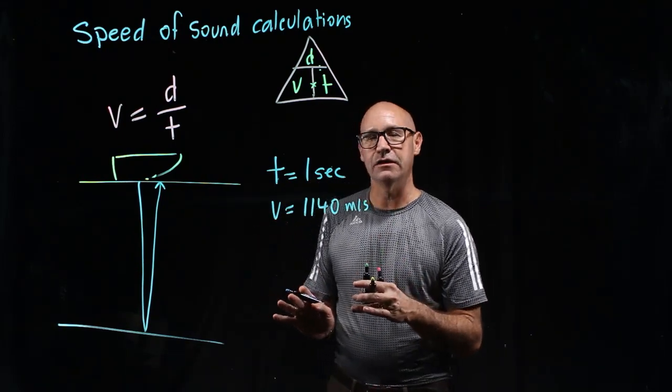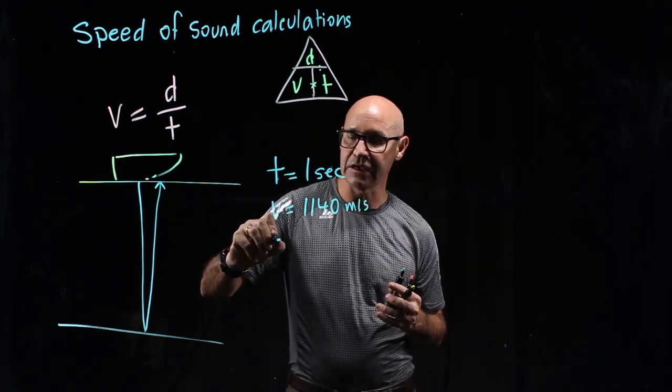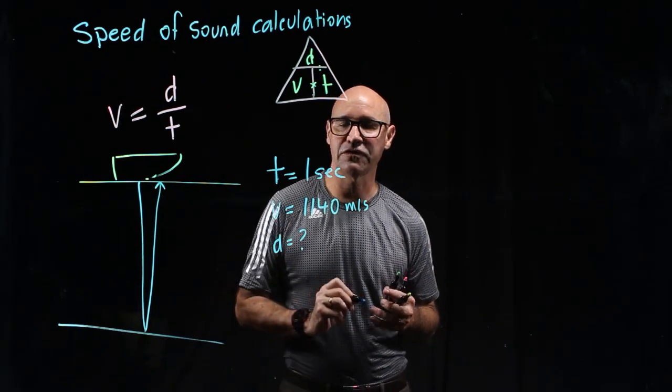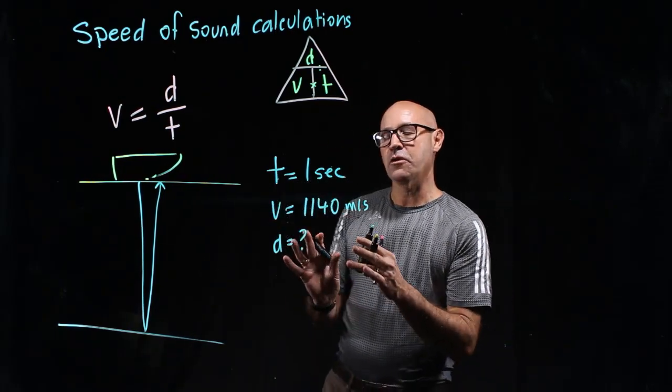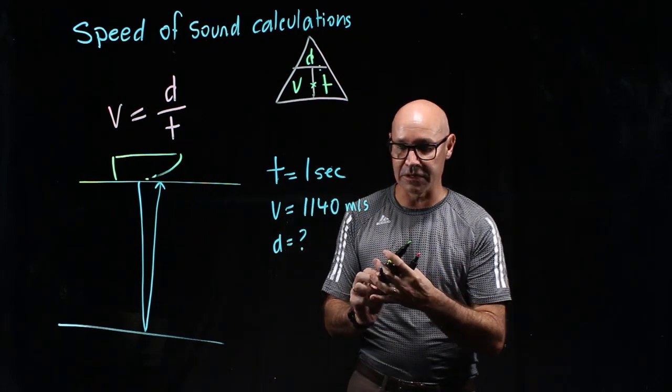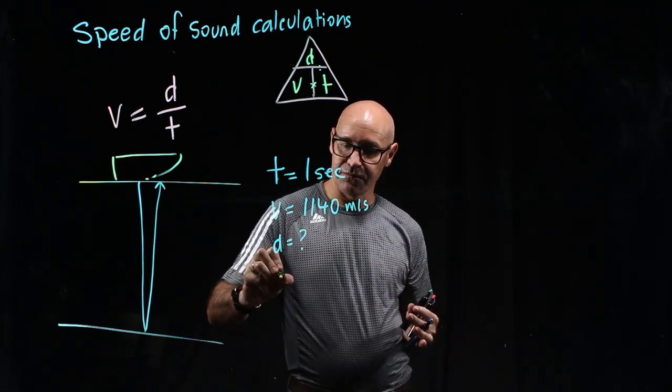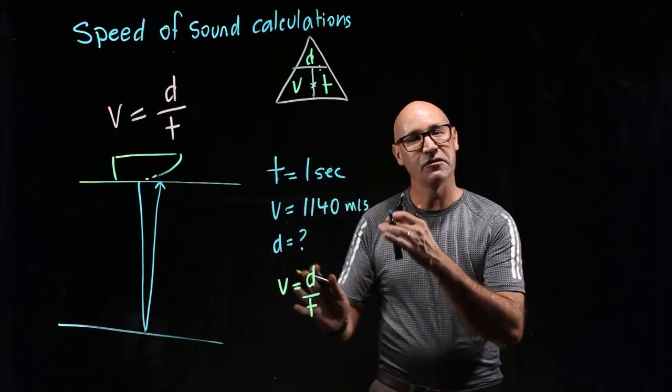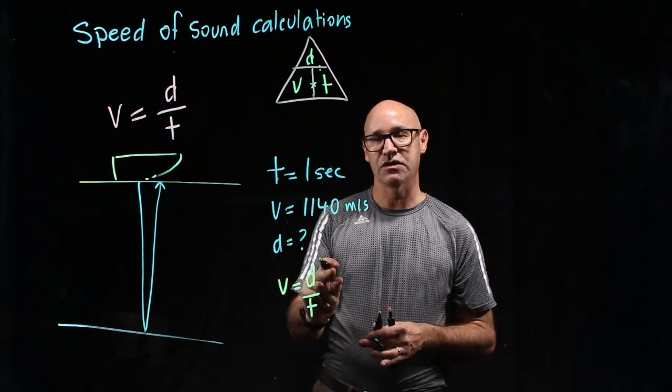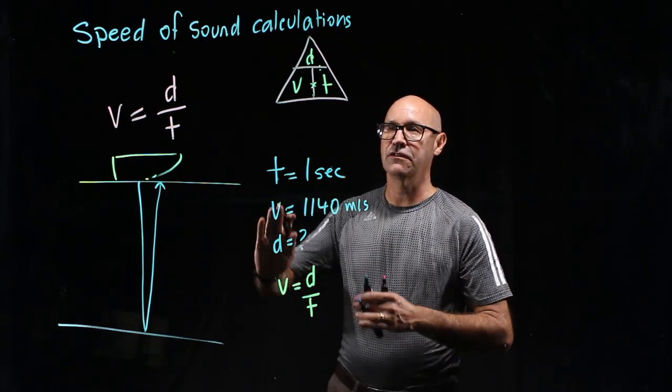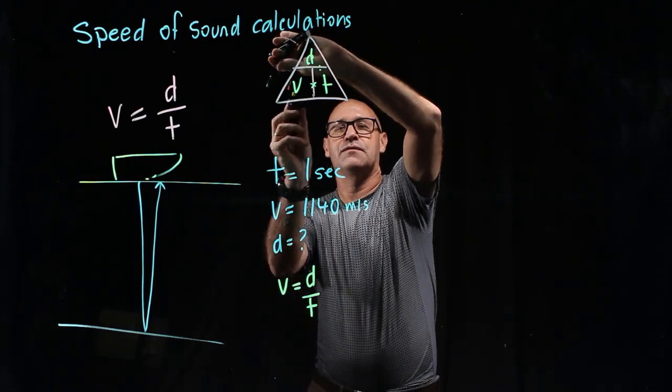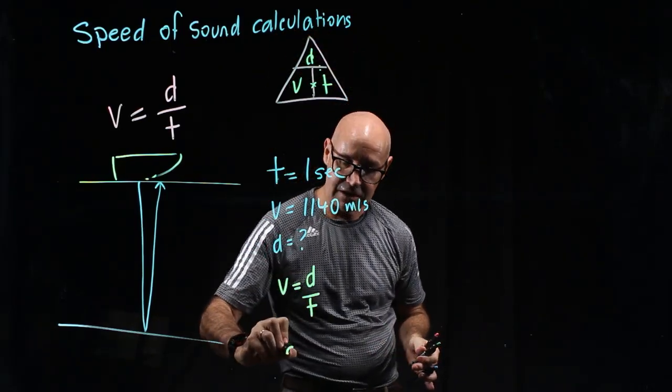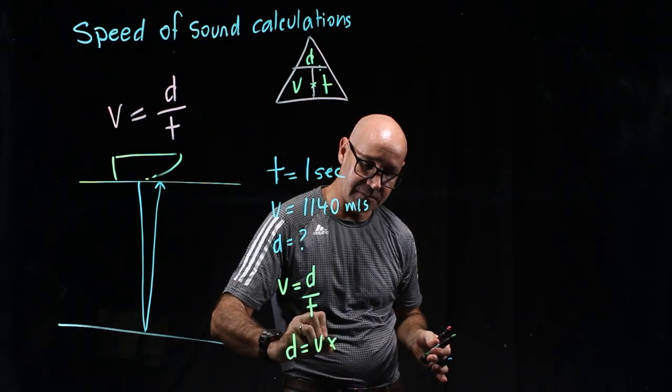So we want to try and work out distance, so d is our unknown question mark. So we need to find the right formula and we're going to use v equals d divided by t, but we need to manipulate the formula such that d is by itself on the left-hand side. Cover up our d, v times t. d equals v times t.